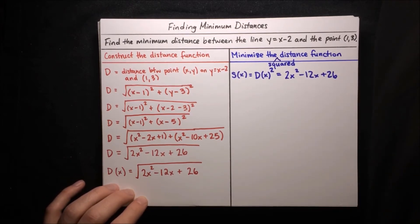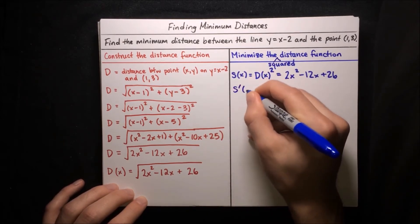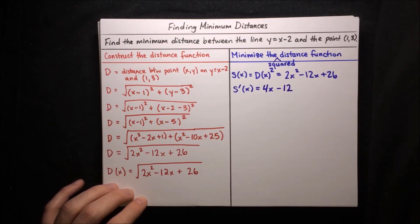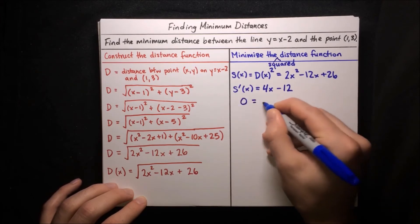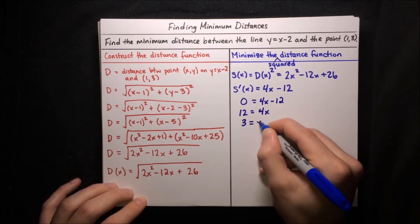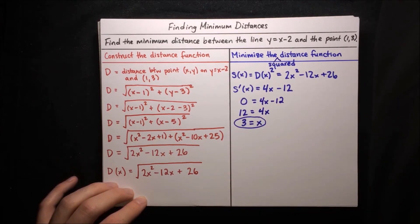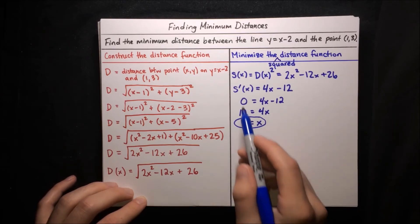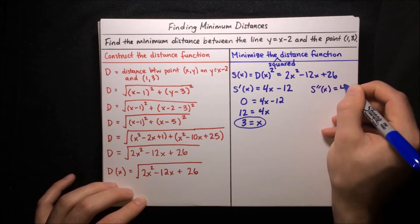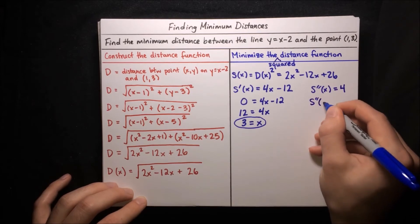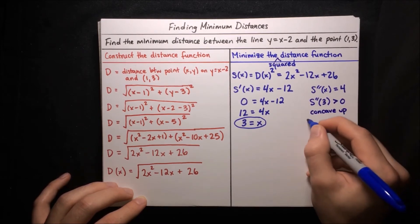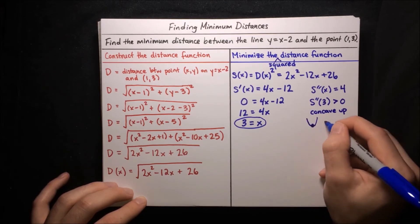This squared distance function is much easier to work with. Taking the derivative: s′(x) equals 4x minus 12. Setting that equal to zero gives 4x equals 12, so x equals 3. To confirm this is a minimum, we apply the second derivative test: s″(x) equals 4. Since s″(3) equals 4, which is greater than zero, the function is concave up, confirming we are indeed at a minimum.